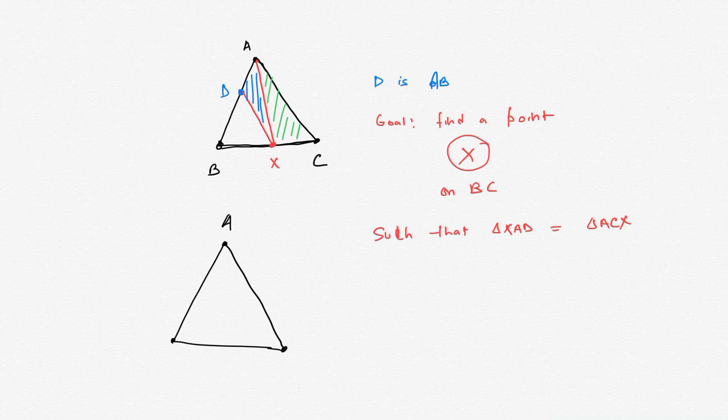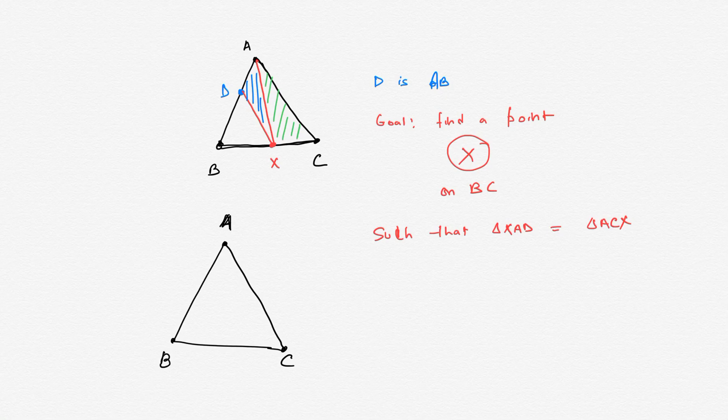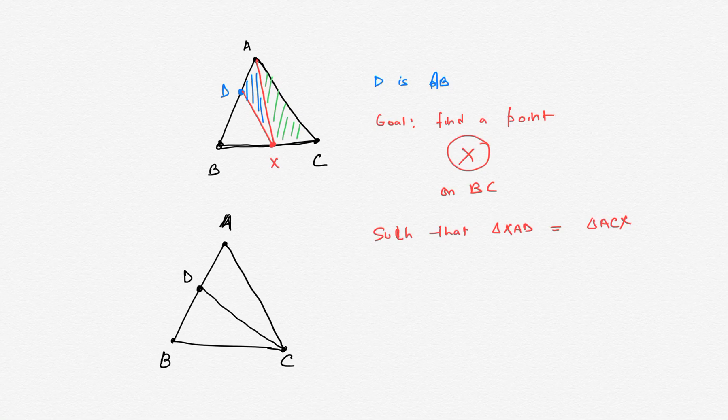Here's what we can do. Let's take ABC as the triangle and D as the point. Join CD. That's step one of the construction.